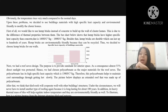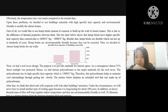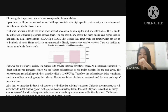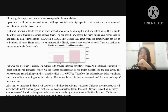Next, we incorporated a roof eaves design. The purpose is to provide sun shade for interior shade space. As a consequence, almost 51% of direct sunlight is blocked. Hence, we chose polycarbonate as the major material for the roof eaves. Polycarbonate has a high specific heat capacity of 1,300 J per °C per kilogram, which helps maintain cool surroundings by heating up slowly. The picture below displays an extended roof made up of polycarbonate.